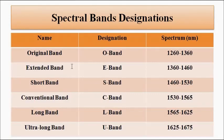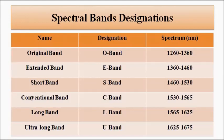The E band is the Extended Band, with a wavelength range of 1360 to 1460 nanometers. The S band is the Short Band, with a range of 1460 to 1530 nanometers. The C band is the Conventional Band, with a wavelength range of 1530 to 1565 nanometers.